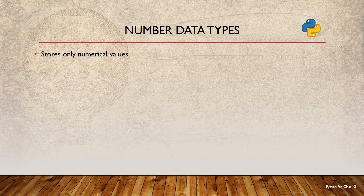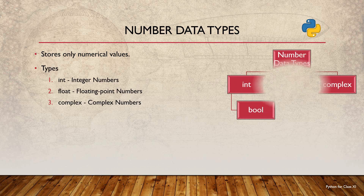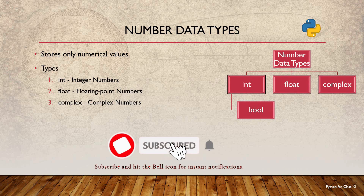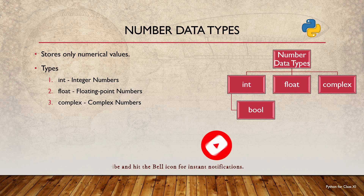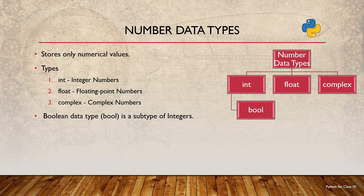Number data types are used to store numerical values only. Mainly there are three different types of data types in Python for number storage: int for integer numbers, float for floating point numbers, and complex for complex numbers. Python also supports the bool data type for storing boolean values, which is actually a subtype of the integer data type.